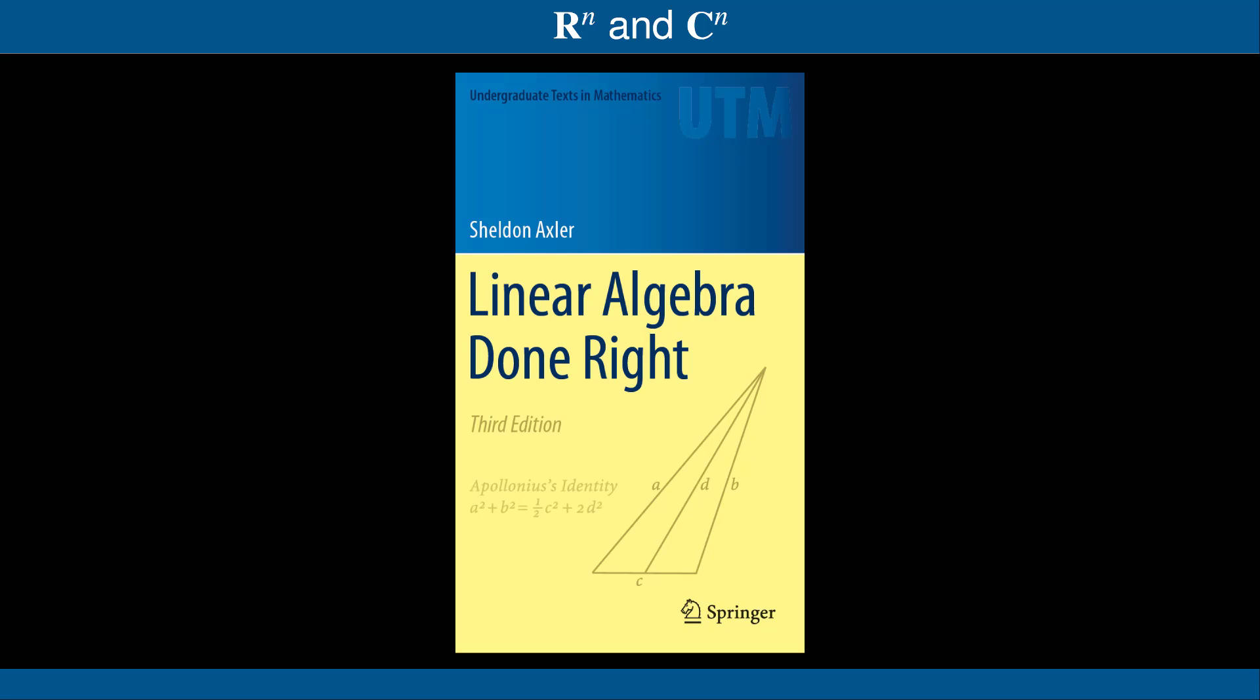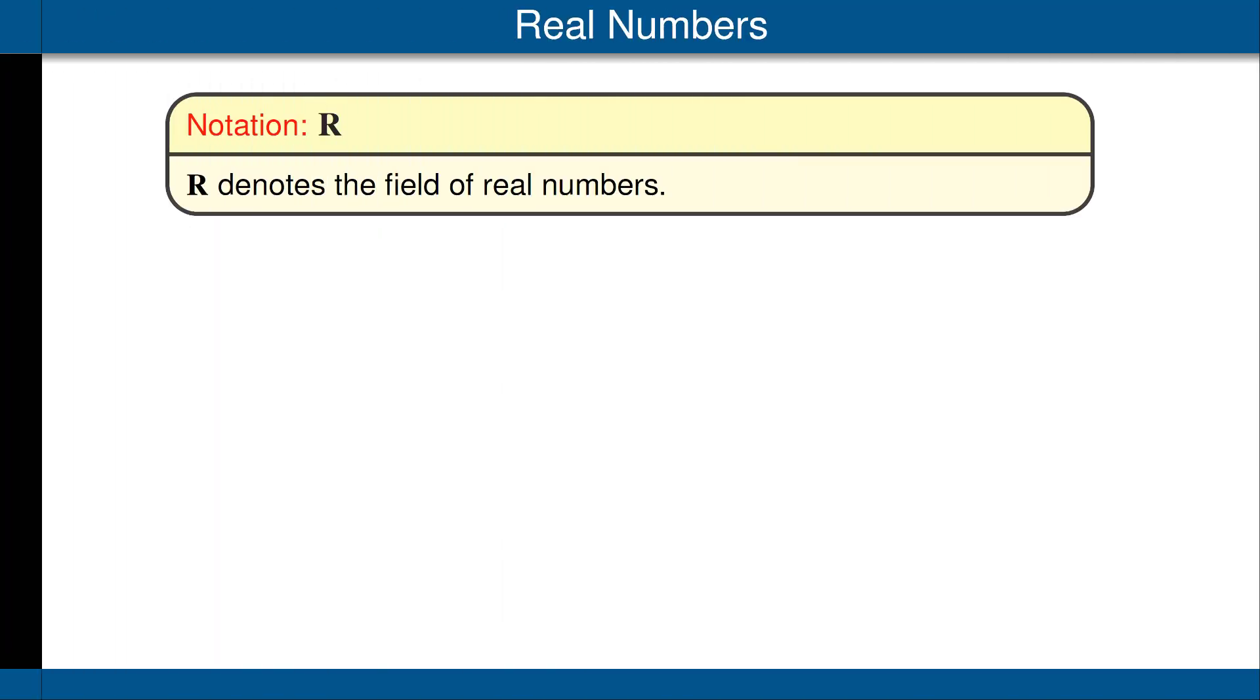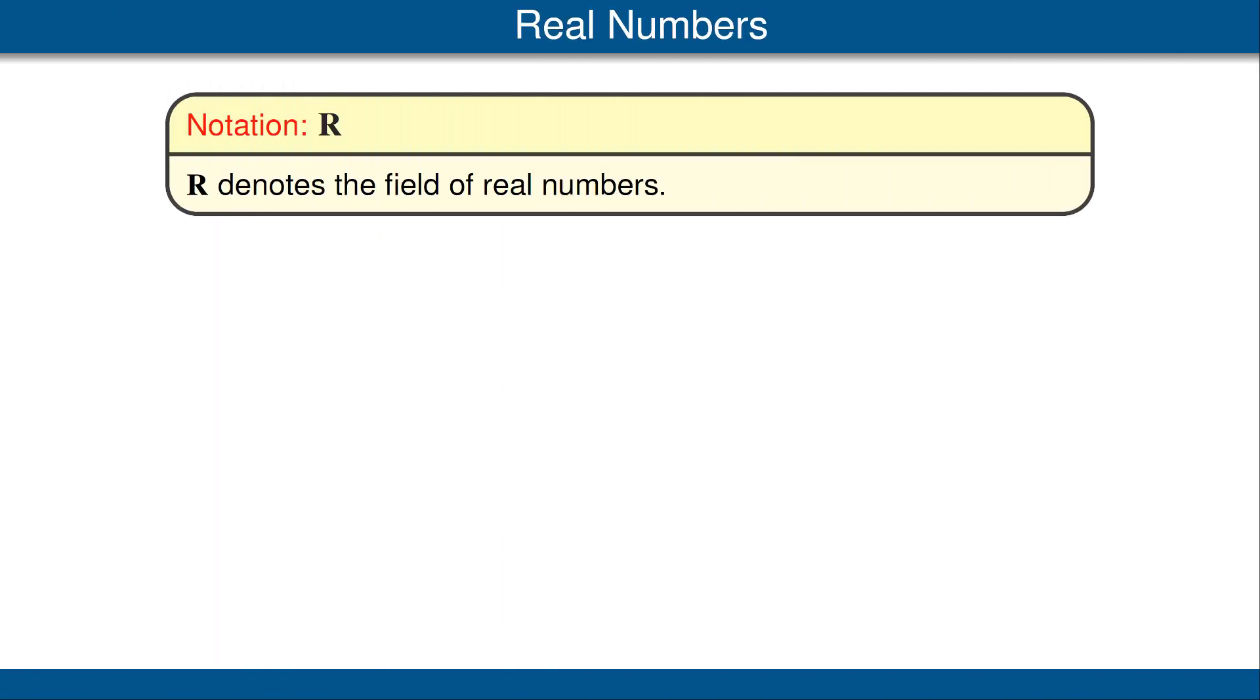Hello, I'm Sheldon Axler, the author of Linear Algebra Done Right. This video discusses a section of the book titled R^n and C^n. You should be familiar with the properties of R, the set of real numbers.